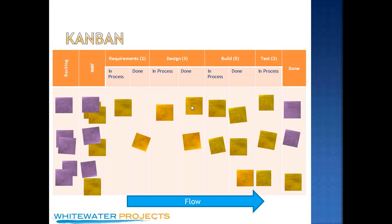Remember how the Kanban card was sent back so that they're pulling inventory in? The same thing happens here. The design people sit and wait until something moves from the requirements group into the done column, and then they pull it. The requirements people finish one and move it over to done, and then pull one from the backlog. So it may look like it's pushing in this direction, but really it's all pulling from the customer end. I apologize for trying to explain Kanban in 15 minutes, but hopefully most of you understand what it is. I have classes where we do several exercises with Kanban.